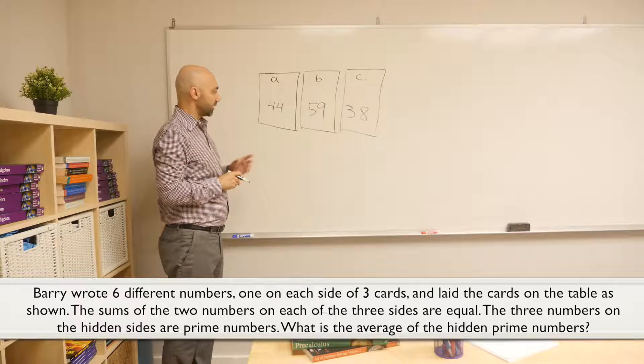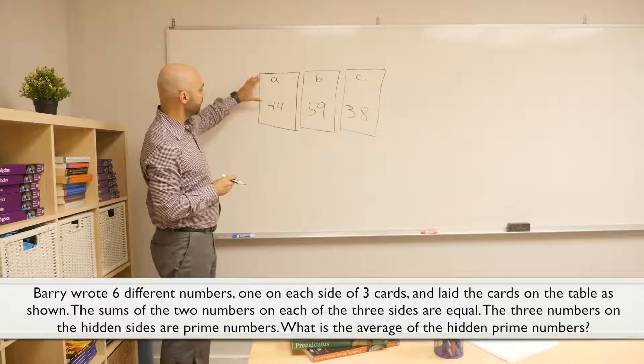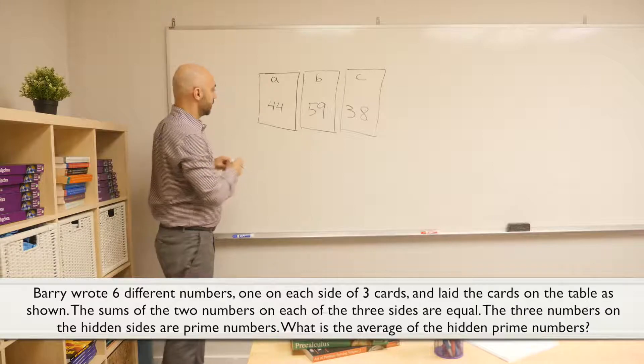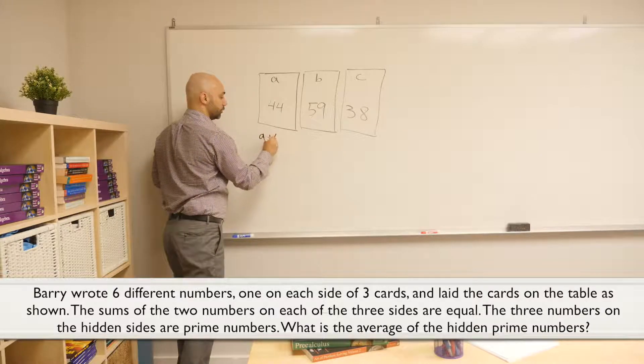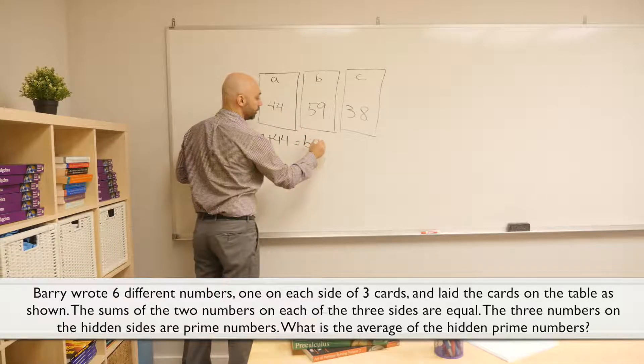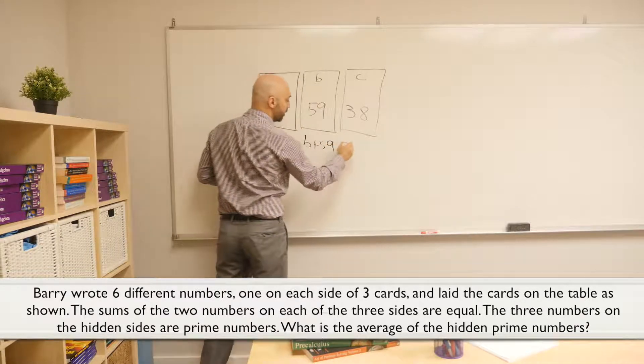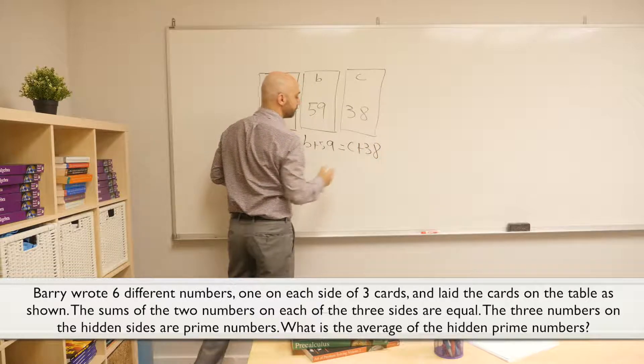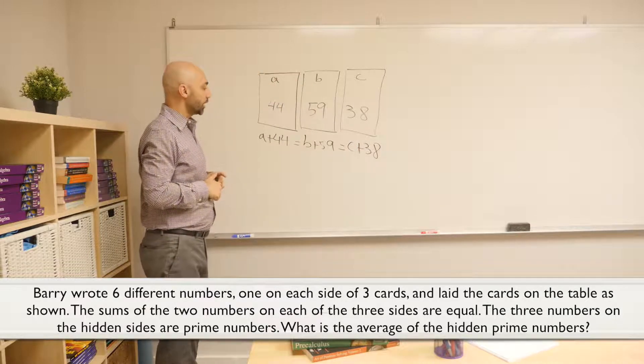There's no two numbers that are the same, and also the sum of the numbers on each card, meaning A plus 44, is the same as the sum of the numbers on the other card, B plus 59, the same as the sum of the numbers on the third card.